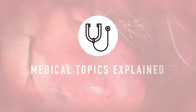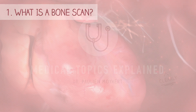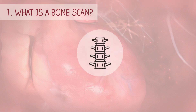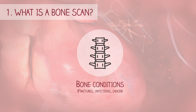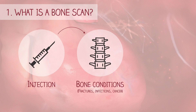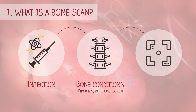In this video, I'll guide you through the procedure of bone scanning. A bone scan is a medical imaging procedure that helps diagnose bone conditions such as fractures, infections, and cancer lesions. It involves injecting a small amount of radioactive substance into the bloodstream, which then accumulates in the bones. A special camera detects the radiation emitted by the radioactive substance, which is used to create an image of the bones and highlight areas with abnormal bone activity.